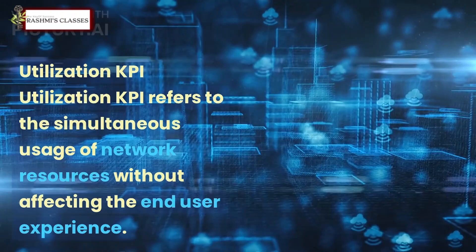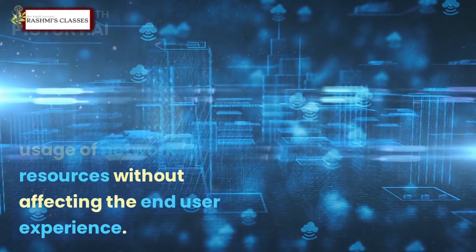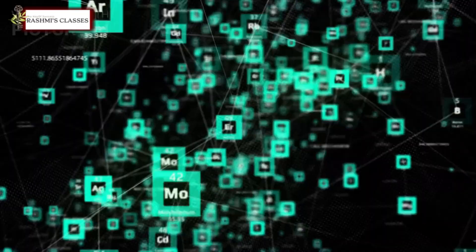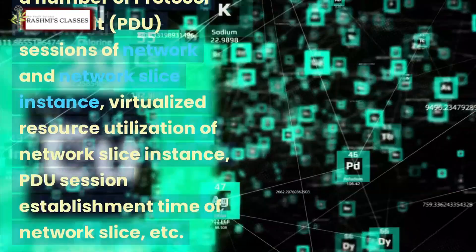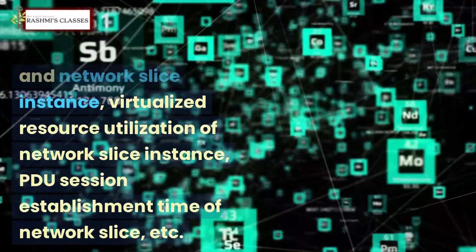Utilization KPI refers to the simultaneous usage of network resources without affecting the end user experience. The categories under utilization KPI are mean number of protocol data unit (PDU) sessions of network and network slice instance, virtualized resource utilization of network and network slice instance, and PDU session establishment time of network slice.